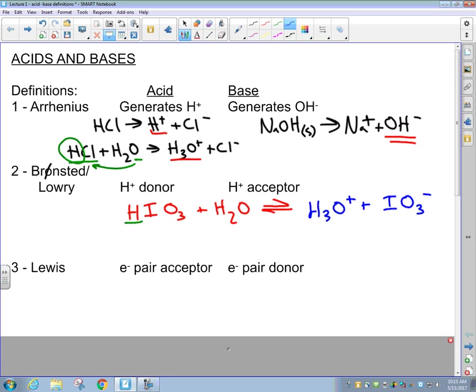Now to define them as an acid and a base, we have to look at the reactants versus the products in this chemical reaction. From the reactant side to the product side, the HIO3 is donating a hydrogen ion. We have the hydrogen ion located right here and then the absence of the hydrogen ion right here. Therefore, we would define the HIO3 as our acid.